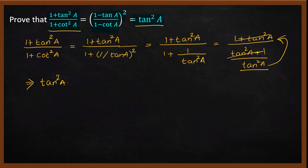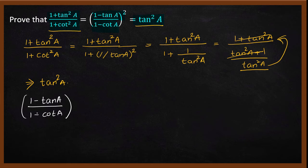And then prove a second part: 1 minus tan a divided by 1 minus cot a, whole square. Again, tan square a. 1 minus tan a — that is where — 1 minus tan a, 1 minus 1 by tan a.